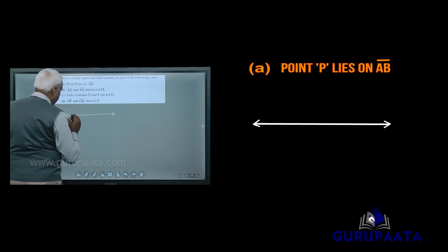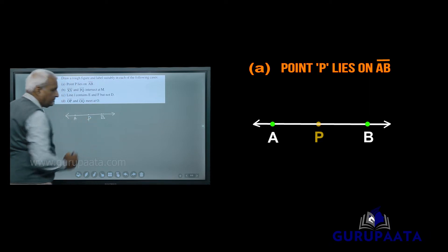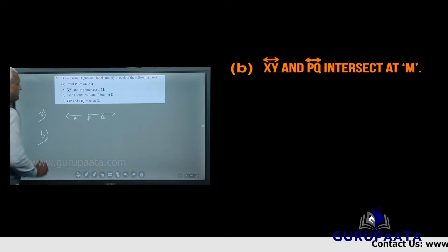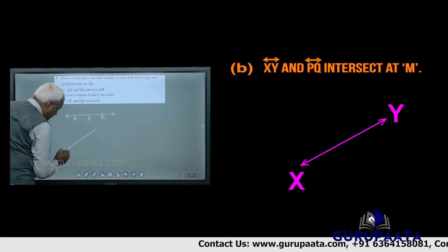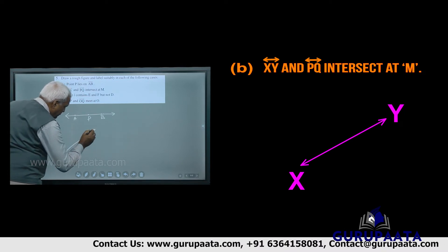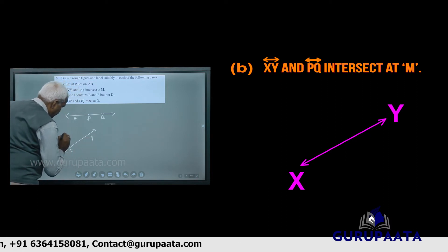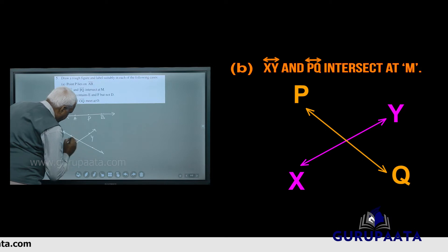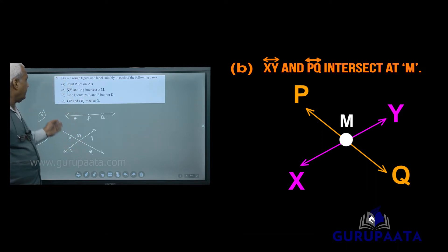For question 5A, we will take points A, B, and a point P. This is the answer for your question number A. We will take now question number B: XY and PQ intersect at M. This is the drawing for your question number B.